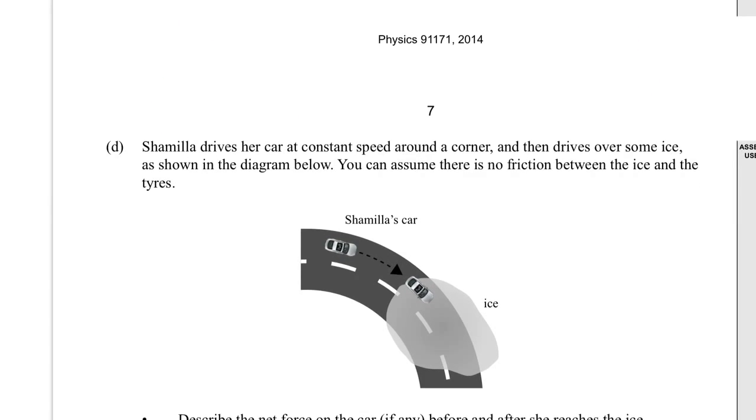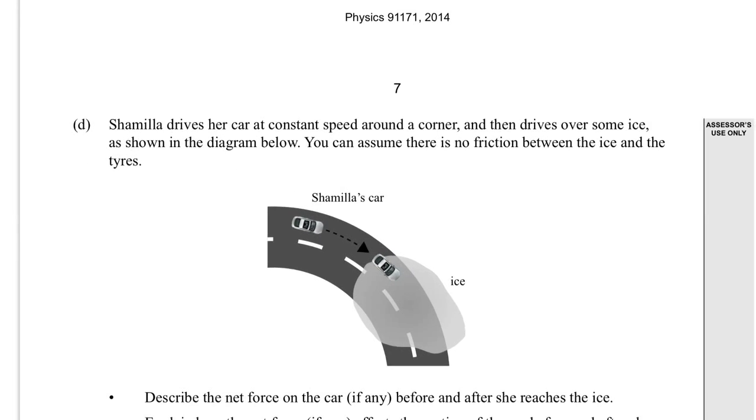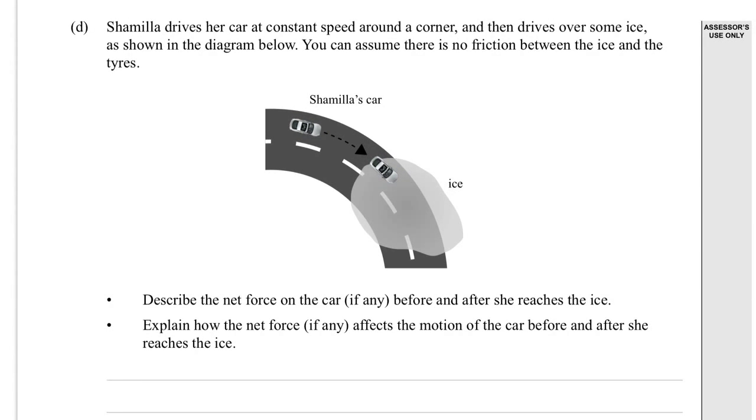D. Is this the last one? I think it's the last one. Oh, there were four questions. I didn't know there were four questions. D. Shamila drives her car, sorry about all the moving, at a constant speed around a corner. Constant speed means you're not accelerating in that, just that speed, that non-vector aspect. It's clearly changing direction, which means it's changing its velocity at a constant speed. And then drives over some ice, so you know there's going to be some slipping. As shown on the diagram below, you can assume there is no friction between the ice and the tyres.